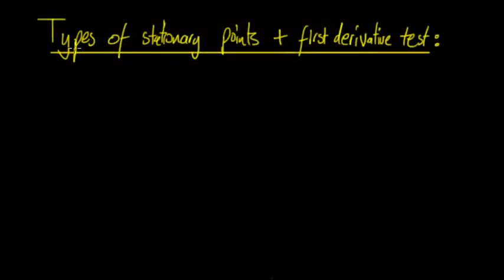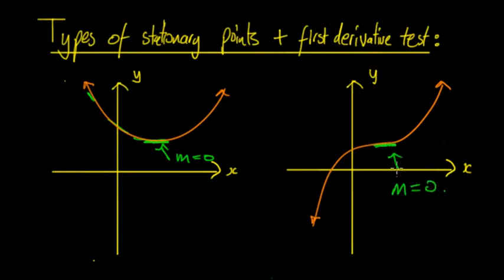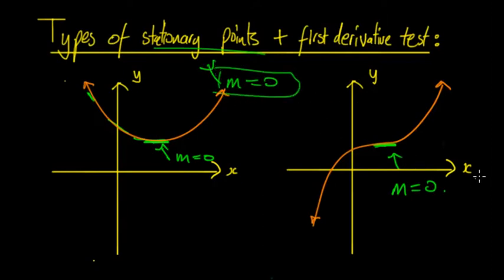In this video we're going to be looking at types of stationary points — identifying and looking at the different types, and the first derivative test. This is a test to determine what type of stationary point it is using the gradient at different points around a particular stationary point. A stationary point is when the gradient m is equal to zero at a particular point, while at either side the gradient is not zero.